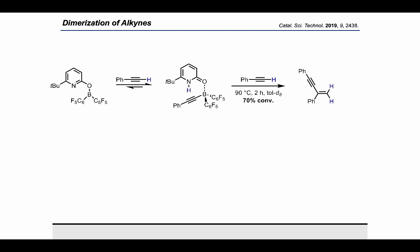Notably, if the alkynyl borane pyridone complex that is formed upon CH cleavage of the terminal alkyne is heated to 90 degrees in the presence of an excess of alkyne, the formation of an enyne, the formal gem-dimerization product of the alkyne, is observed.